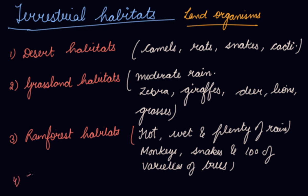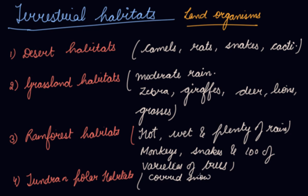Another terrestrial habitat is tundra or polar habitats. These are areas completely covered with snow. Living organisms here include polar bears, penguins, and some grasses.